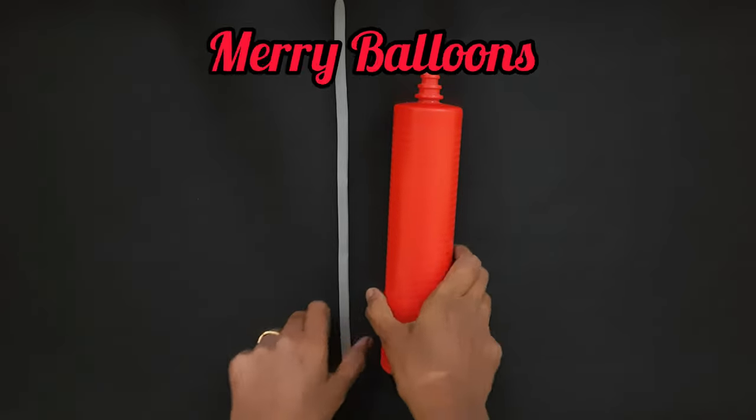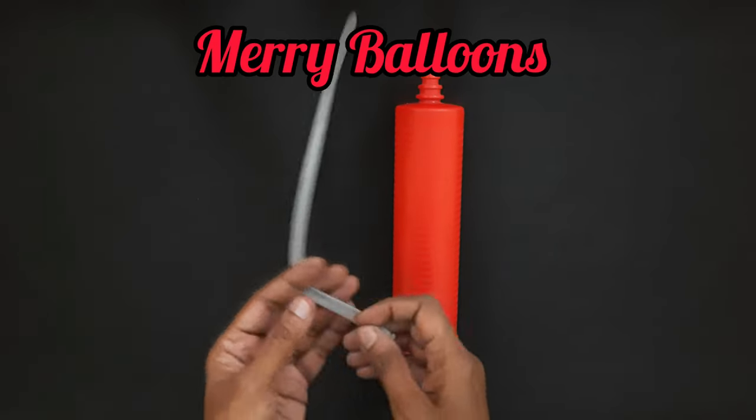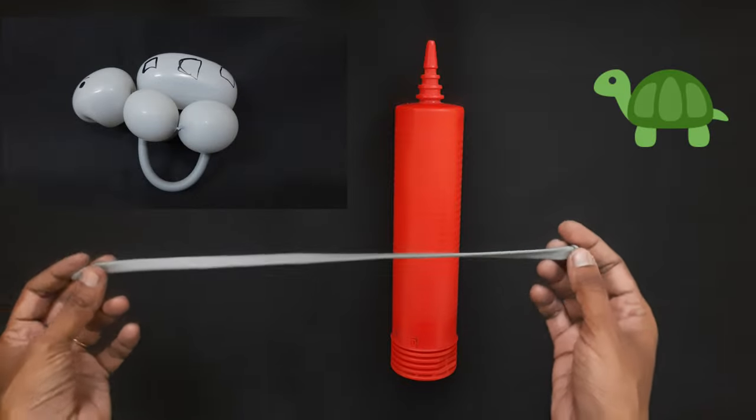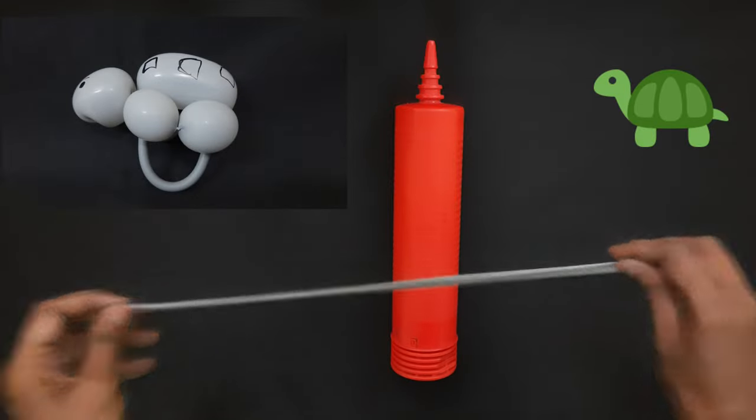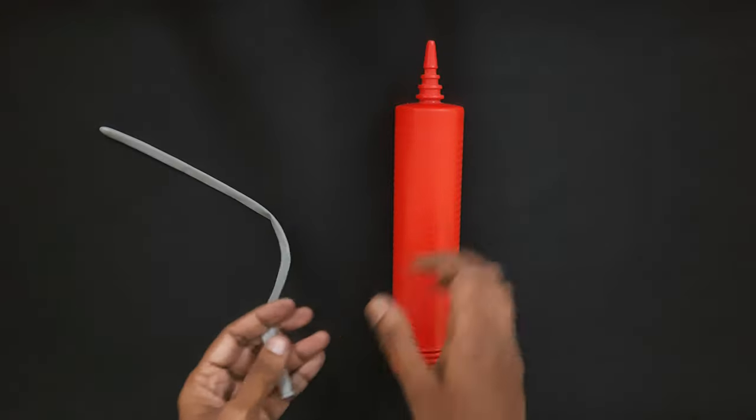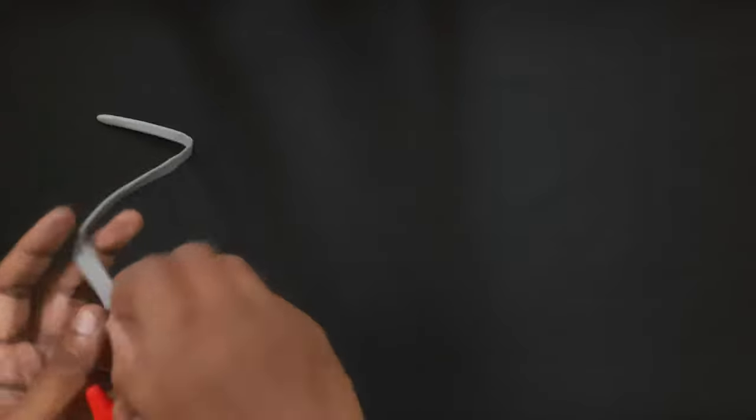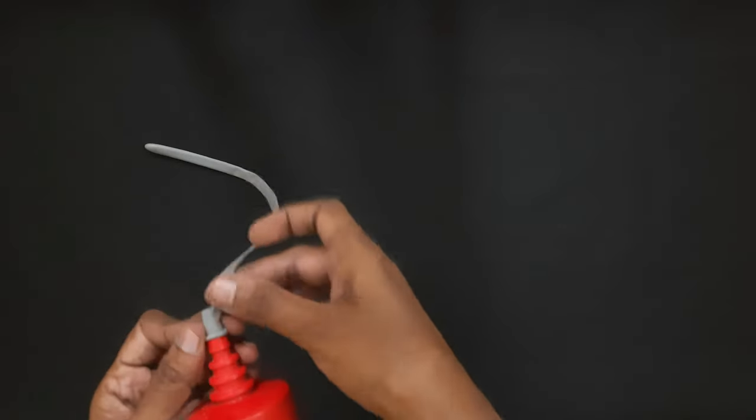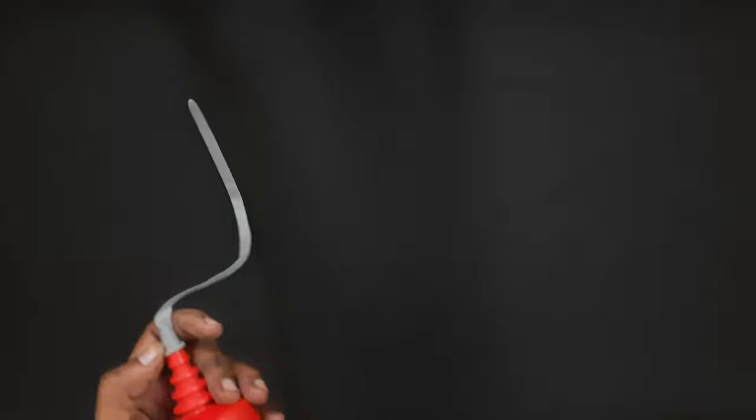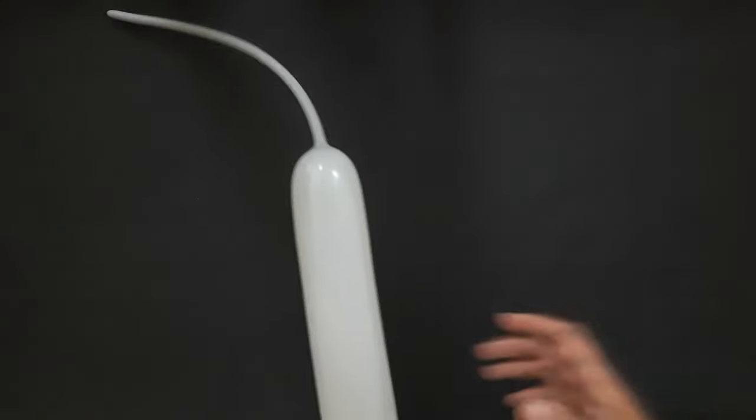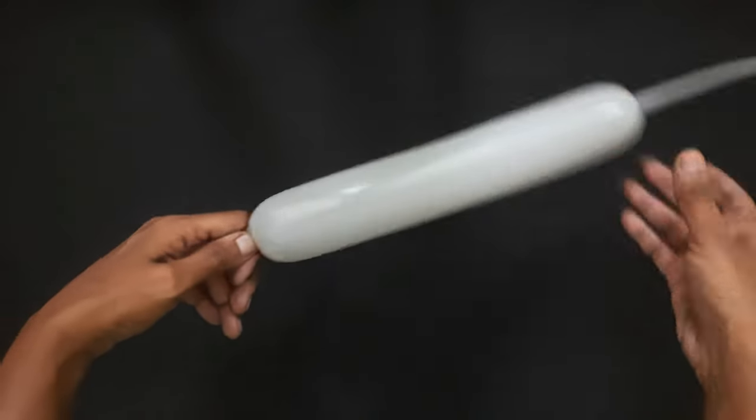Hello everybody, welcome to Mary Balloons. Today we will see how to make a turtle bracelet, for which I have taken a gray 260 balloon. You can take any color of your choice. After giving it a good stretch, we will inflate just two pumps, then release a little bit of air and tie the knot.